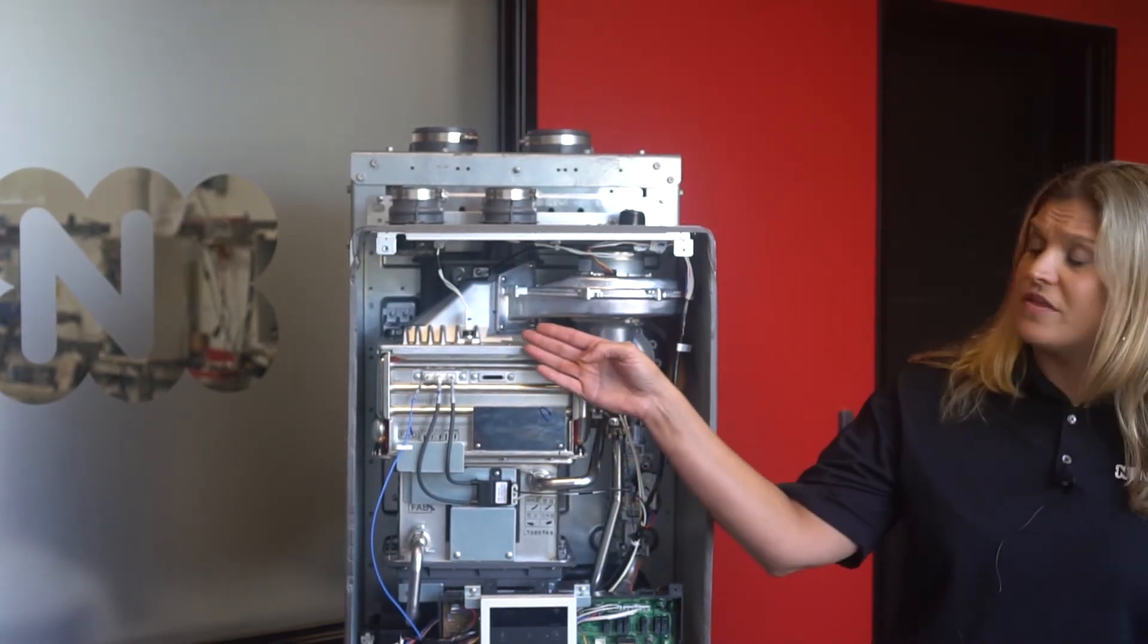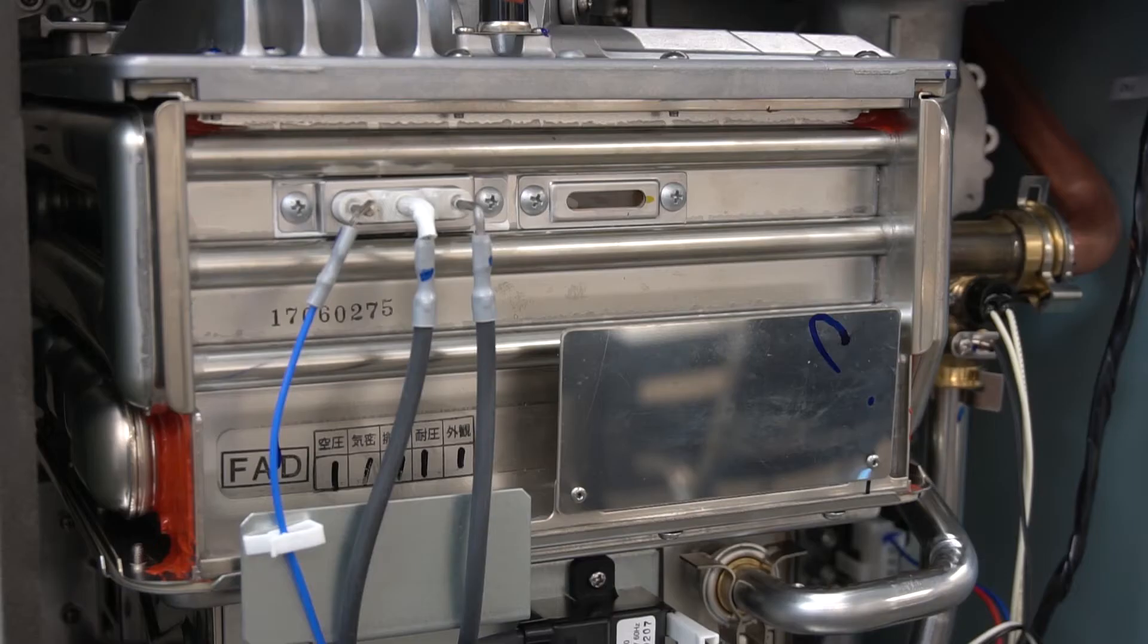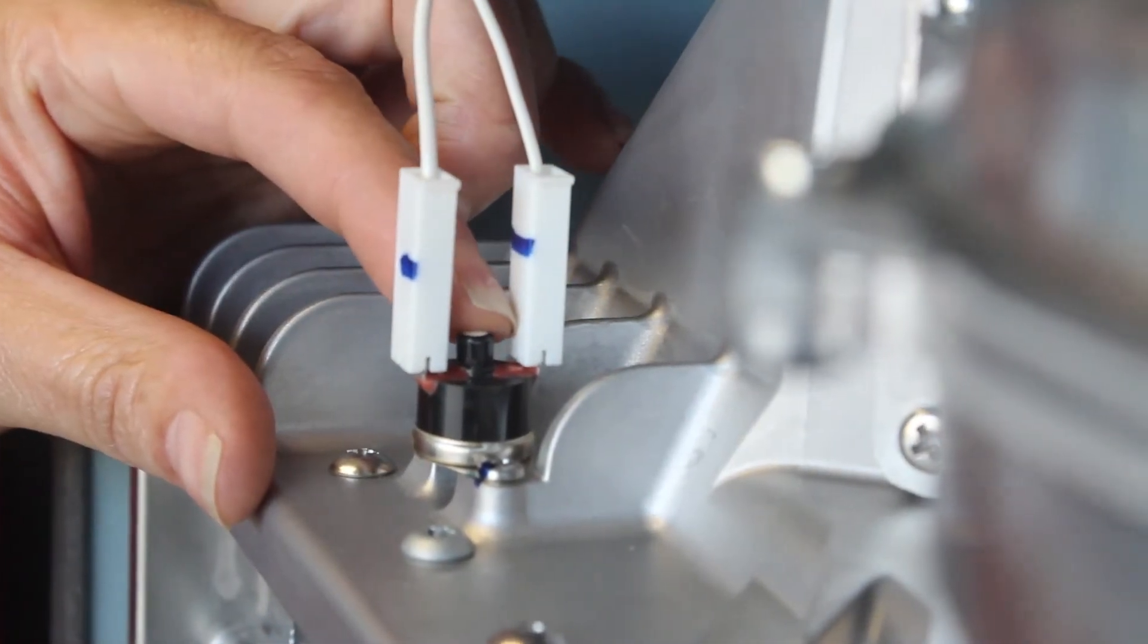Our burner is equipped with a high limit switch. This high limit switch is resettable. This takes away from having a thermal fuse wrapped around the heat exchanger, so if the burner does get too hot all you do is push the button and reset that high limit switch.